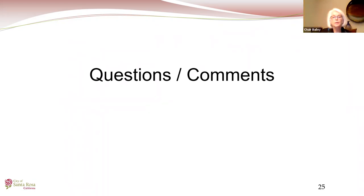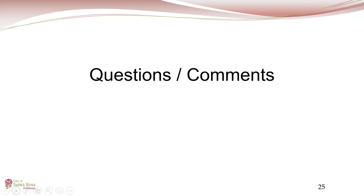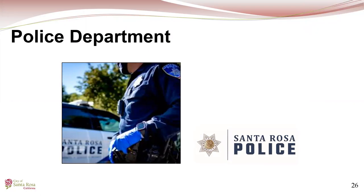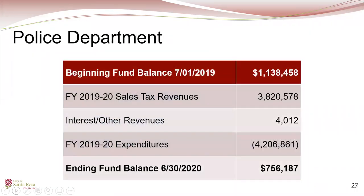The chair thanks the fire department and wishes staff safety. Pam Lawrence, Administrative Services Officer for the police department, presents the financial overview. The police department began with reserves of $1.1 million, received $3.8 million in sales tax revenue and $4,000 in other revenues, but spent $4.2 million in expenses, requiring another dip into reserves and leaving a balance of $756,000.